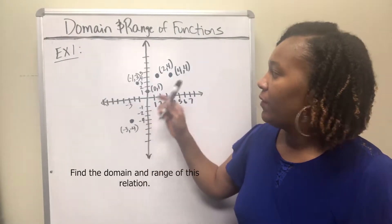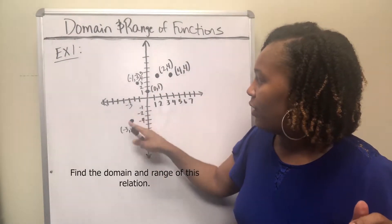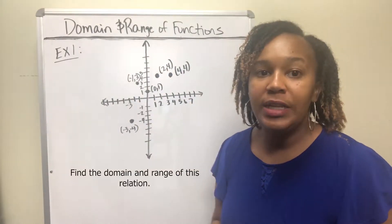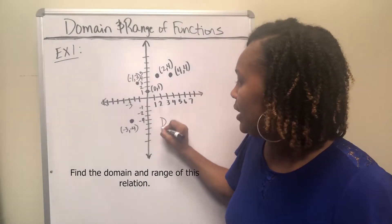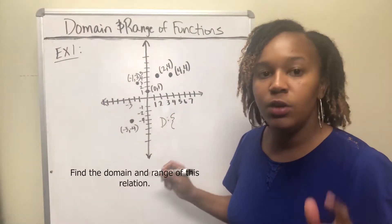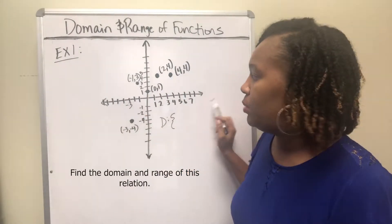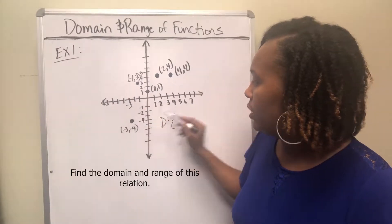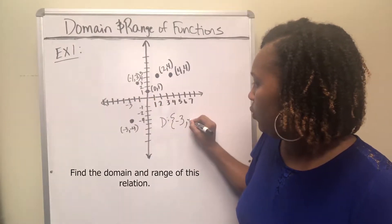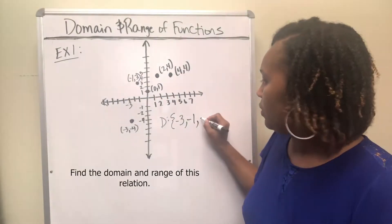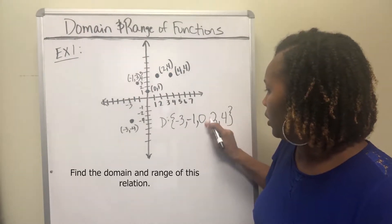For this first example, we want to find the domain of this graph. This graph consists of just ordered pairs — just random points. I have five random points here. Anytime you have a graph that is just basic points, when you write the domain, you want to write it in set notation — that's with the braces — and you want to list out all the x values. You always want to read your graph from left to right, that's from smallest to biggest. So your smallest x value is negative three, then negative one, then zero, then two and four. And so your domain will look like this.